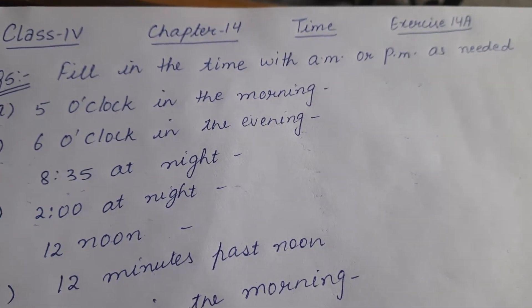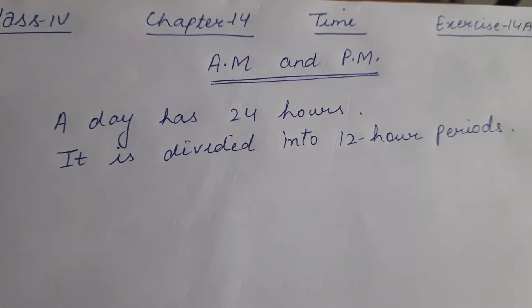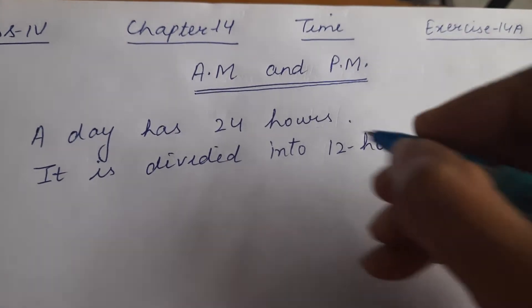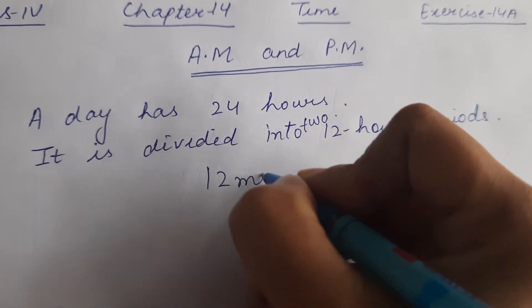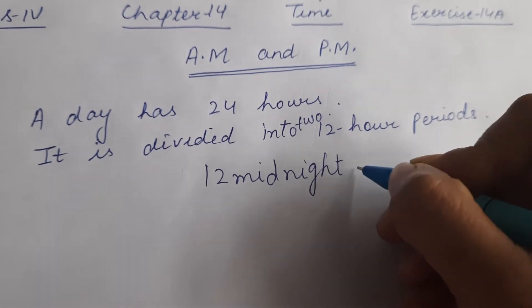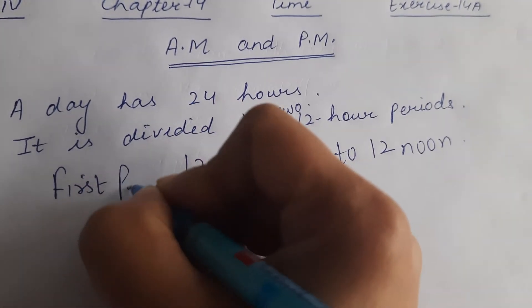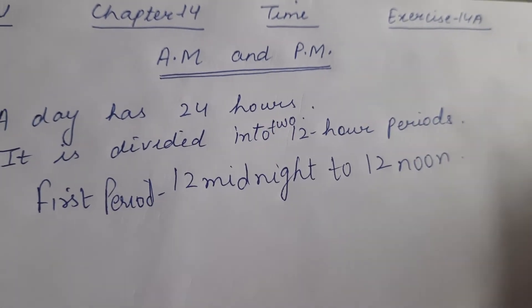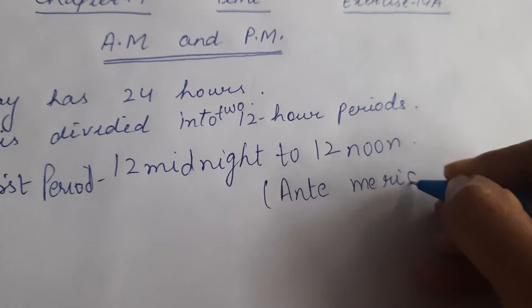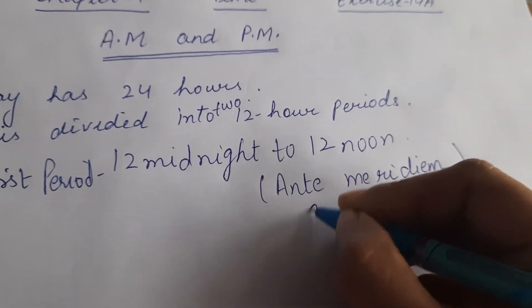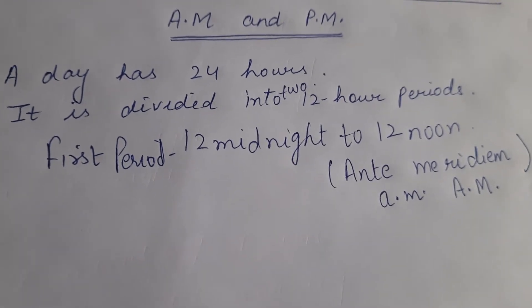First of all, let's discuss a.m. and p.m. We know that a day has 24 hours, and it is divided into two 12-hour periods. The first period is from 12 midnight to 12 noon. This is called ante meridiem — a.m. or in capitals A.M. — meaning the time before midday is a.m.